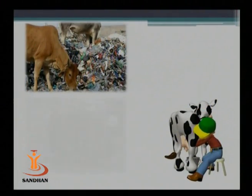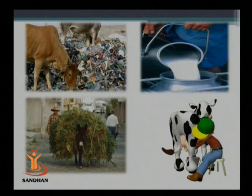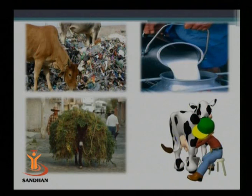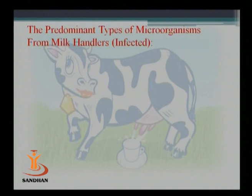Some animations and pictures give you a routine idea of how milk can be contaminated. In the first picture you can see that a cow is having its food from a garbage area, which gives you a clear idea that if this type of food is consumed by the cow, then the quality of the milk it delivers will be poor. The utensils and things used for carrying milk should be sanitized, and sanitation should be done at every stage to prevent spoilage.